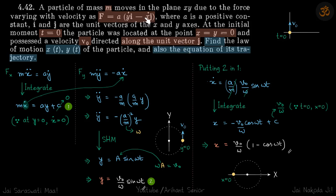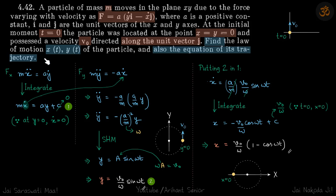Because forces are given separately in x and y direction, let's analyze the motion separately. Writing F=ma: the x-direction force gives a·ẏ = m·ẍ, and the y-direction force gives -a·ẋ = m·ÿ. Notice that the equation for ẍ contains ẏ, and the equation for ÿ contains ẋ, so we have two coupled variables.